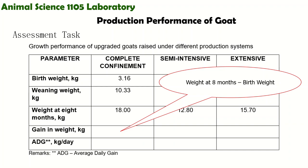When we say different production systems, we have complete confinement, semi-intensive, and extensive. Complete confinement means the goats are confined — they have housing and are kept there 24/7. Semi-intensive means during the day they are free-range, but at night they are placed in a pen. Extensive means throughout the day and night the goats are free-range.